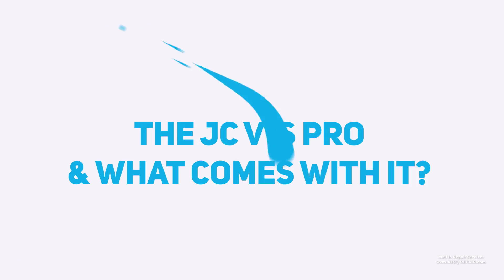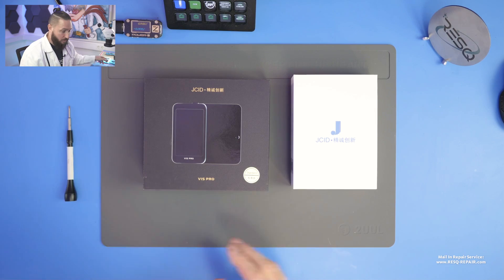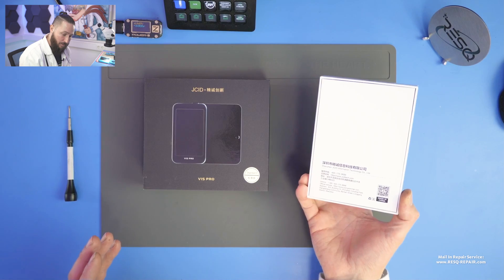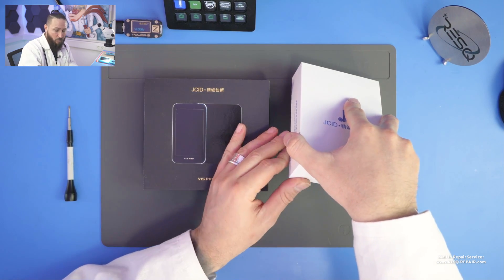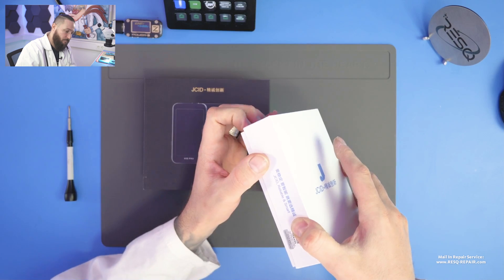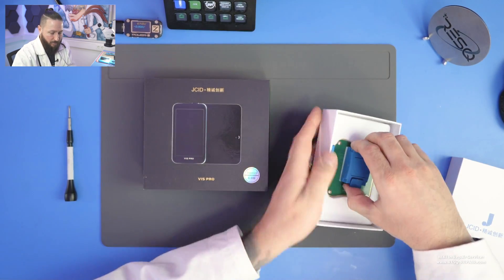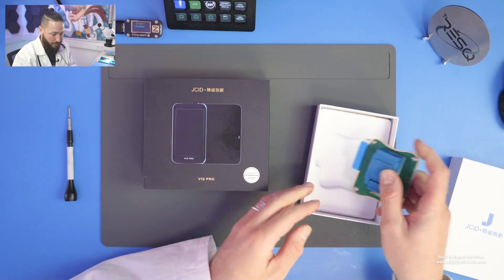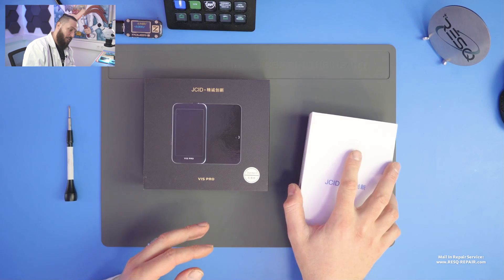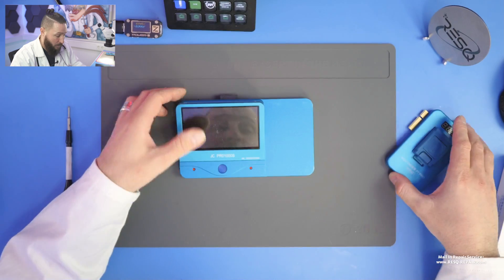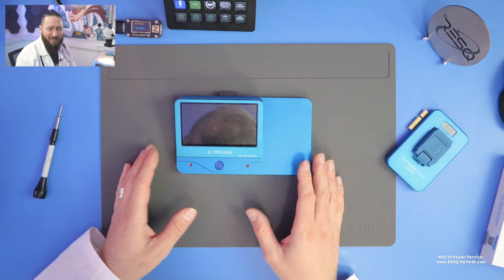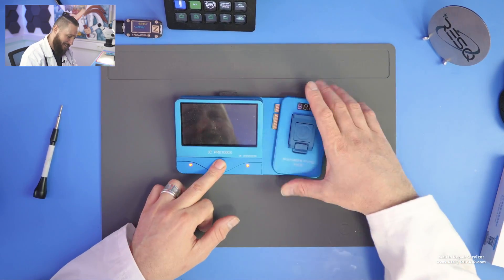I have some news about that, but first I want to show you the device and then we'll have a look at what this device can do. What we have here on top is a BGA adapter for BGA 110. You can connect this to the V1S. Before, I want to show you the device which was JC's standalone programmer for a long time, it was the Pro 1000S. It looks a little bit old, it's been some years ago.